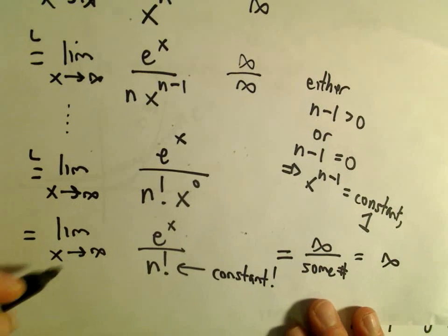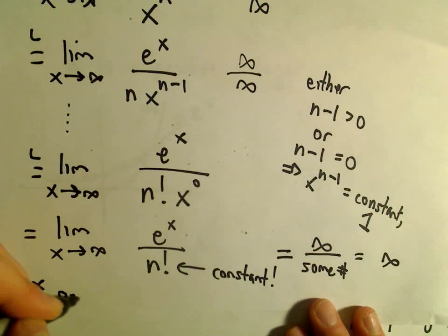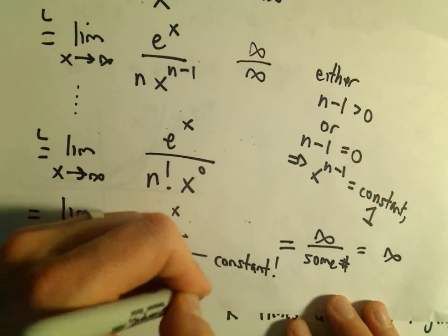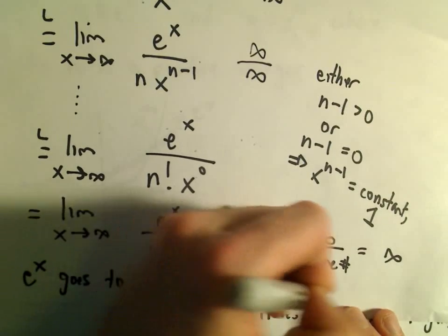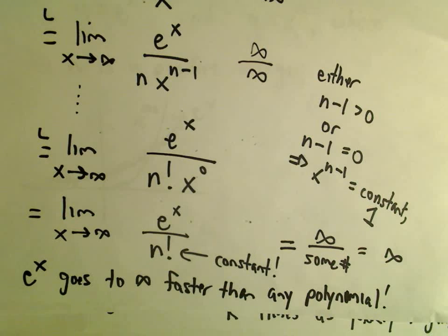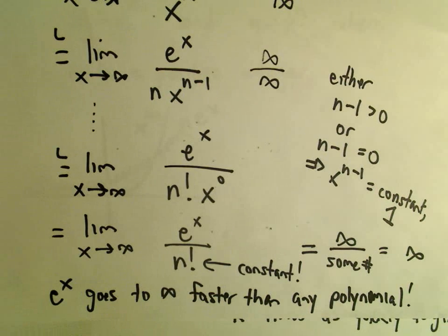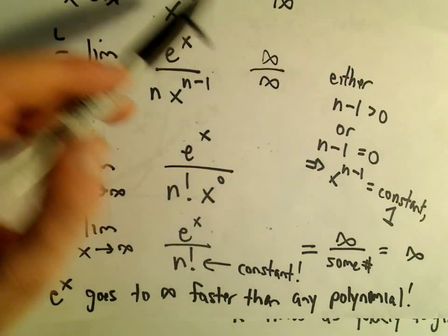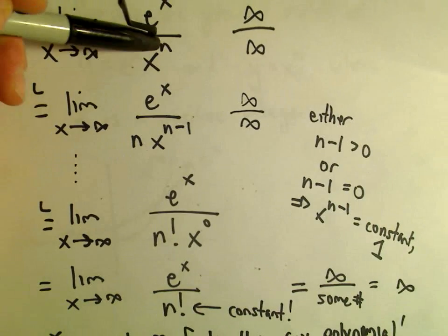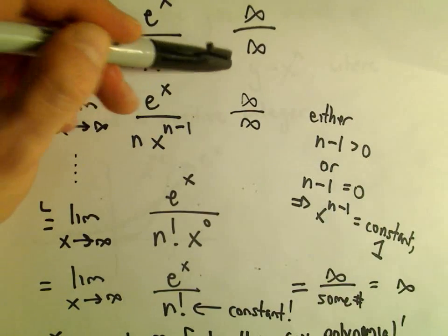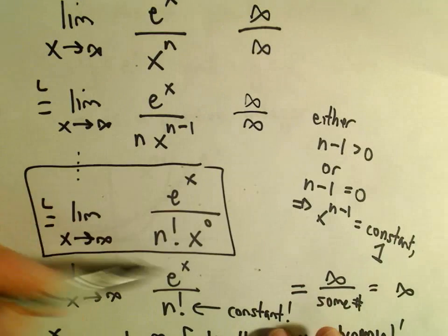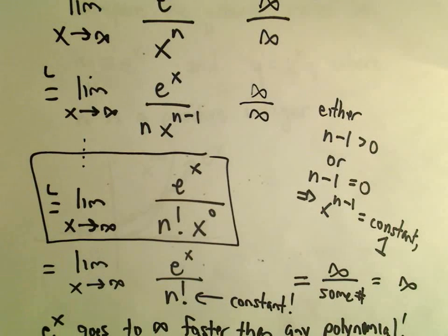What we've shown is that e to the x goes to infinity faster than really any polynomial. We just used x to the n, but you could justify this for any polynomial — if you had extra lower-degree terms left over, by the time we get to this step, after doing enough derivatives, we'd simply be left with the same result. So that's the basic idea.